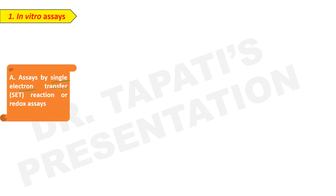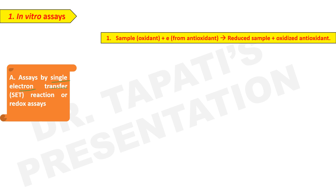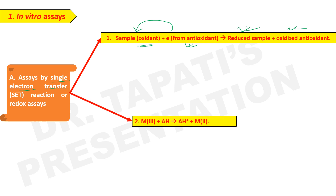Single electron transfer reactions can be of three types. In the first type, an electron from the antioxidant is transferred to the oxidant, the oxidant is reduced, and the antioxidant is converted to an oxidized antioxidant compound — so the antioxidant is actually reducing the oxidant. In the second type, the antioxidant donates an electron to metal ions, and the metal ions are reduced.